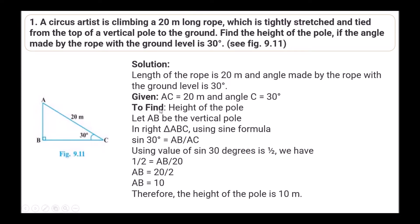Let AB be the vertical pole. In right triangle ABC, using the sin formula: sin 30° = AB/AC. Using the value of sin 30° = 1/2, we have 1/2 = AB/20, so AB = 20/2 = 10 meters. Therefore the height of the pole is 10 meters.